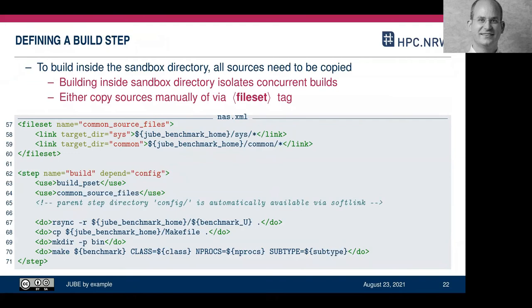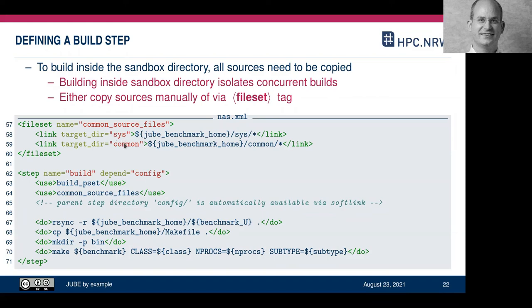We also need a file set for the common build files. Besides the 'copy' tag, there is a 'link' tag you can use in a file set to create symlinks instead of copying — useful for large read-only input files. I link the 'sys' and 'common' directories from my benchmark home into my build sandbox, creating symlinked target directories for each.